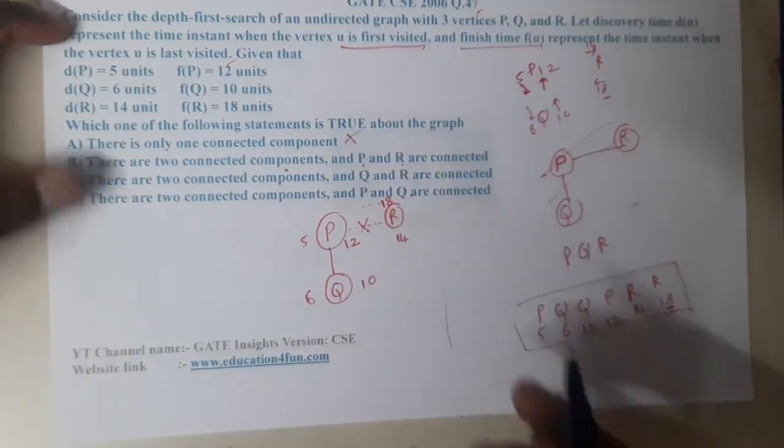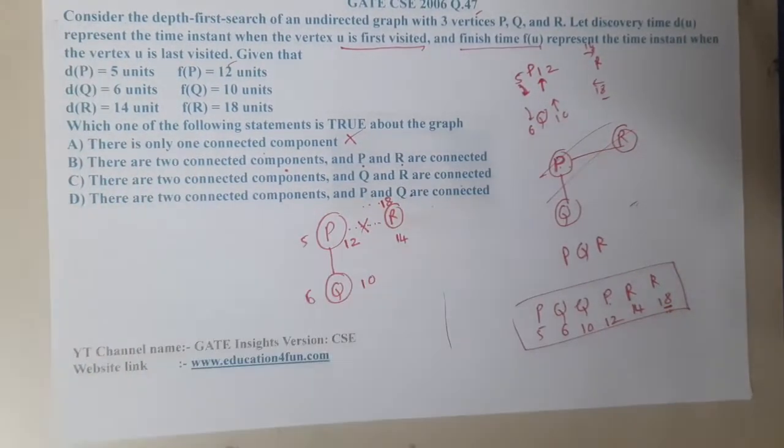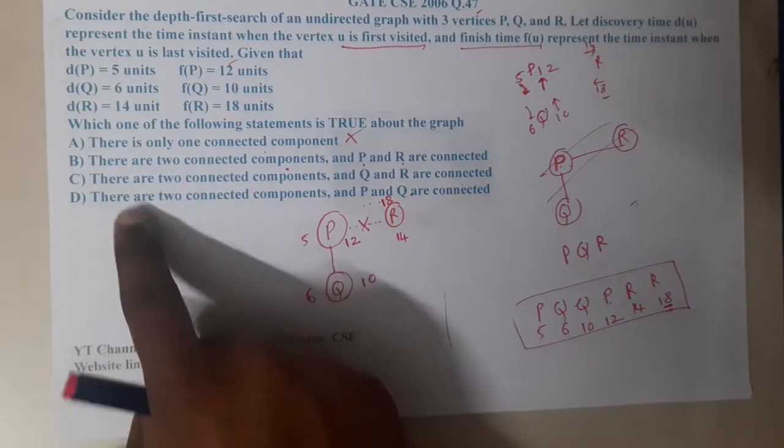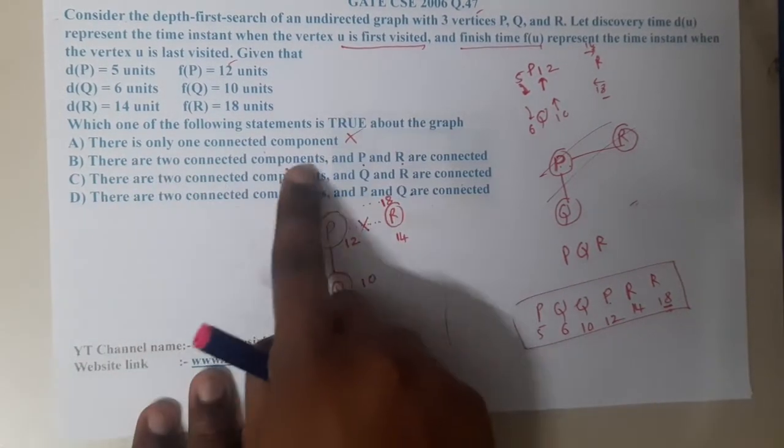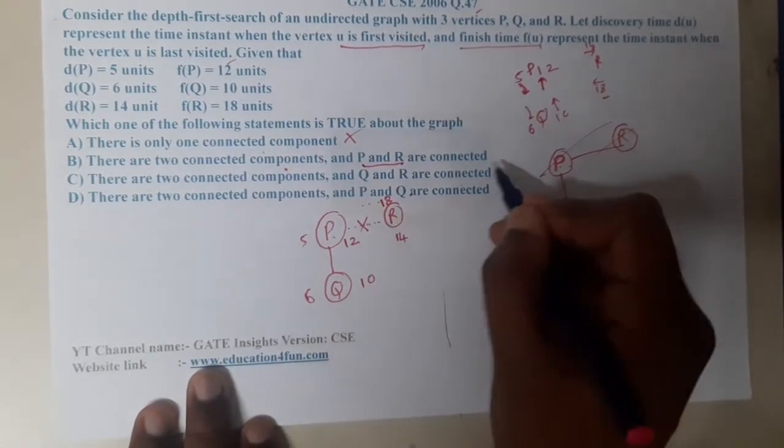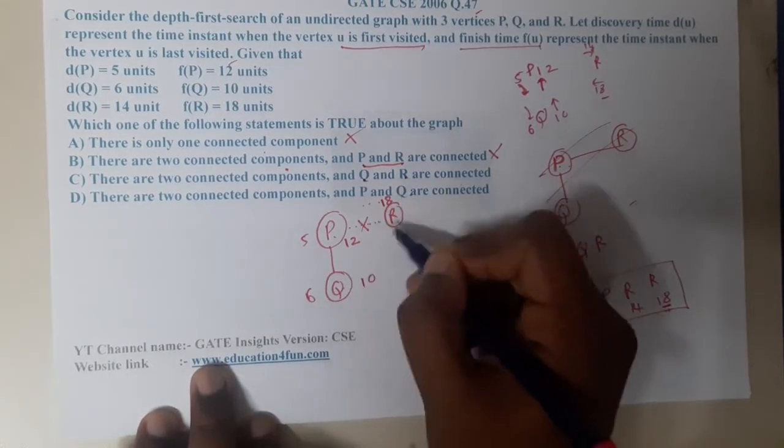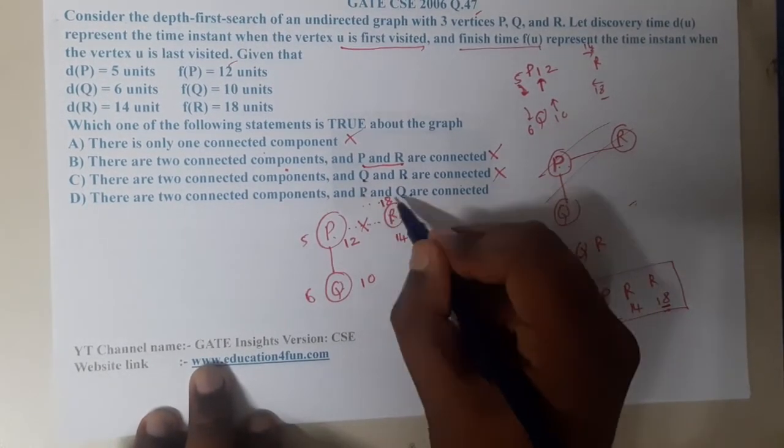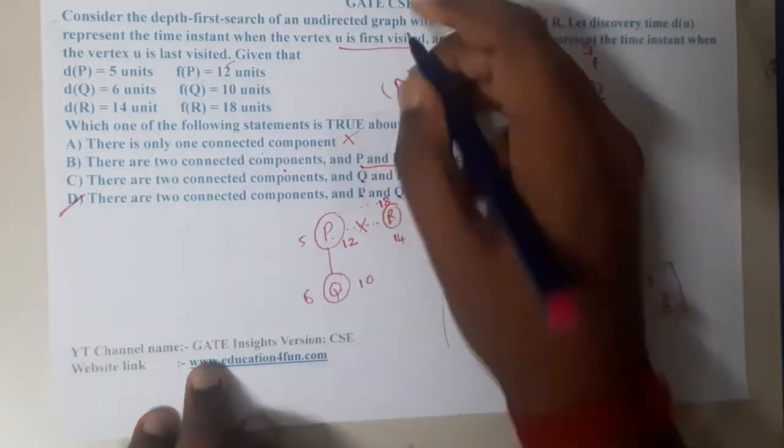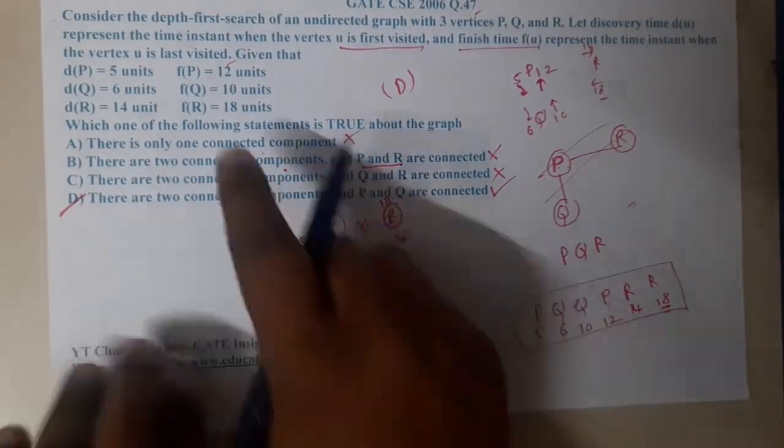With this you can say that option A is wrong. There is only one connected component. Similarly, moving on there are two components. The first component is P to R - are we having connection? No. Q to R - are we having connection? No. P to Q? Yes. So option D will be your correct answer.